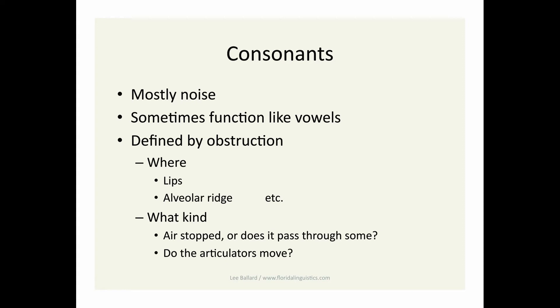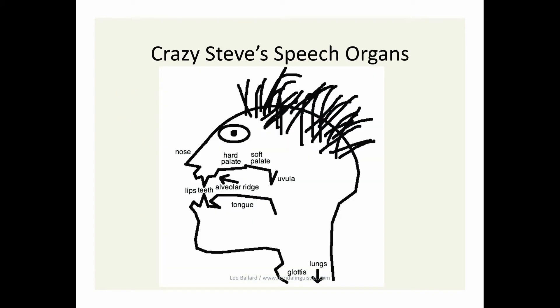Second, the type or degree of obstruction. Is the air completely stopped, or does some pass through? Do any articulators move during the production of the consonant, or do they basically hold steady? Find the lips and the alveolar ridge on this picture.